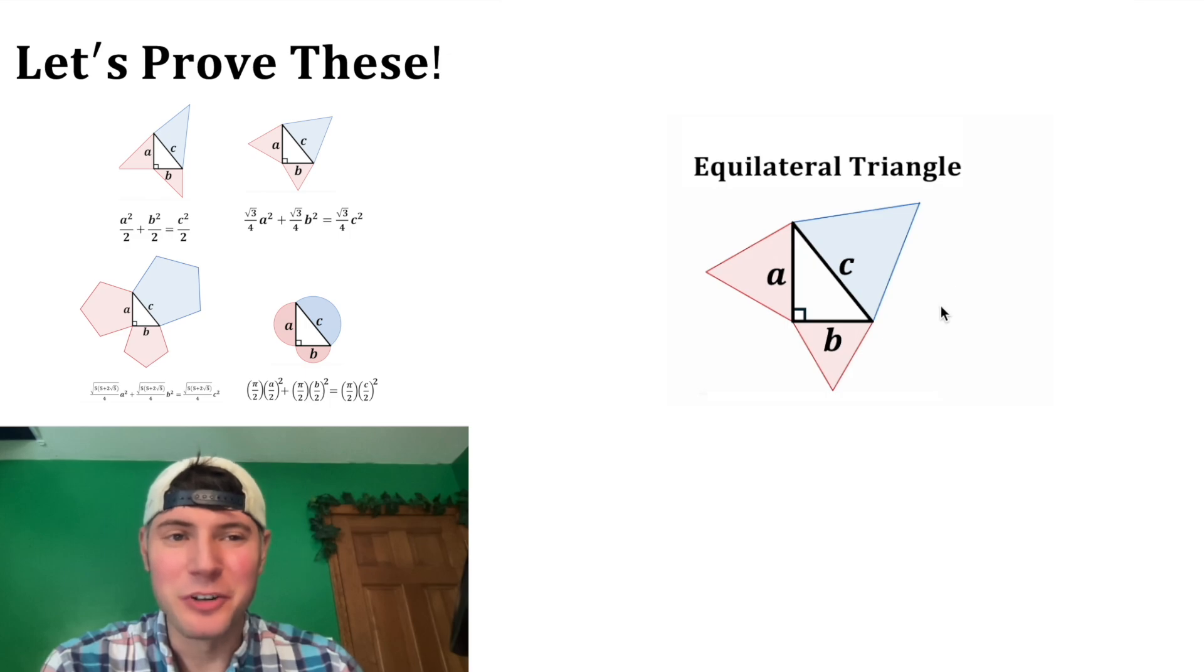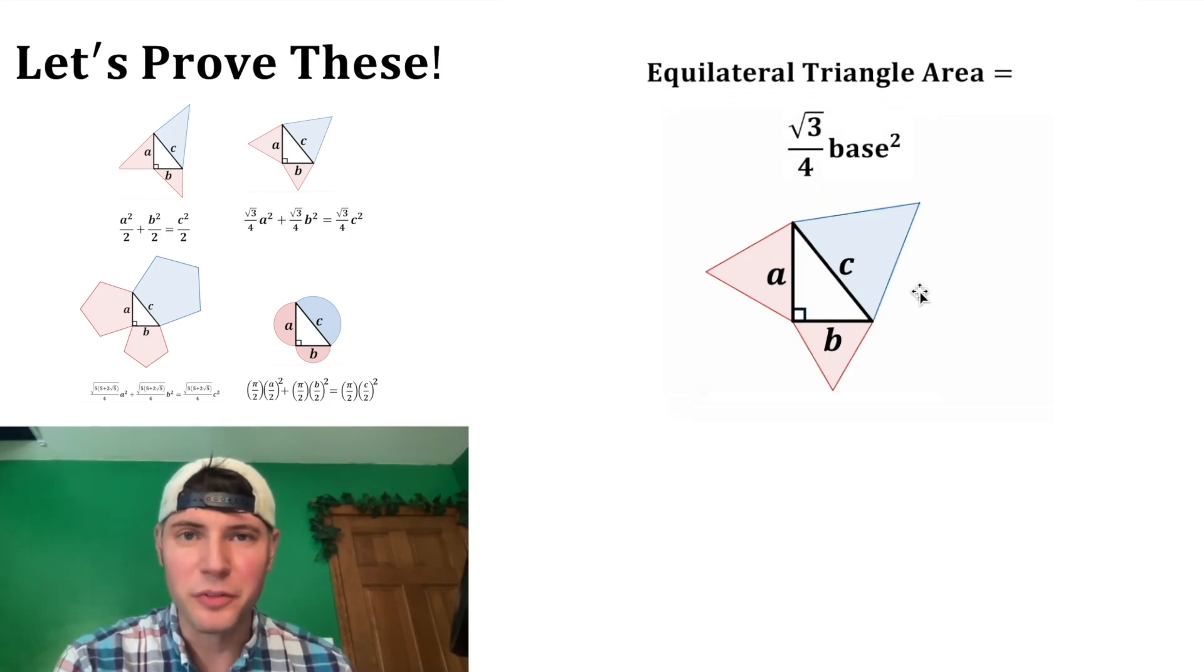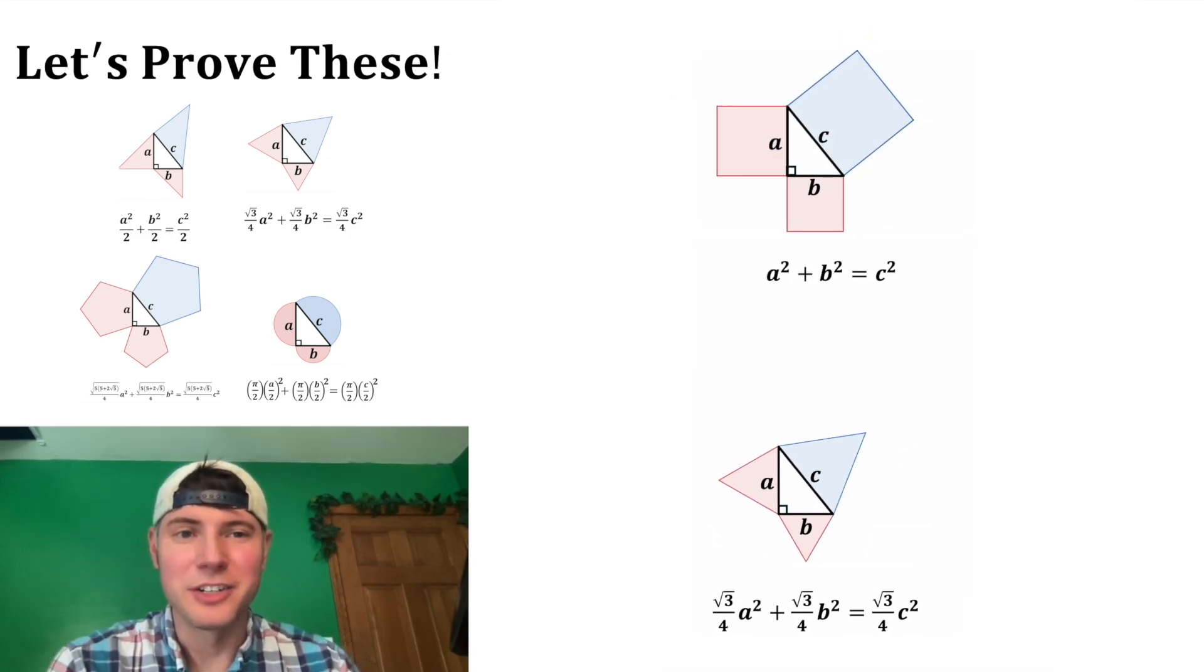And you can do something similar for equilateral triangles. The area of an equilateral triangle is the square root of 3 over 4 times the base squared. So this formula would be root 3 over 4 a squared plus root 3 over 4 b squared equals root 3 over 4 c squared. And you can imagine how we get from here to there.